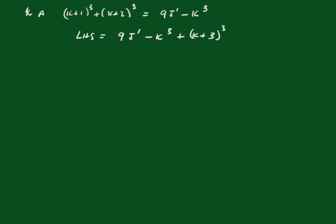Okay, so a couple of ways of doing this. I'm going to use the difference of two cubes — but if you prefer, you can just expand it out and it'll still work out. So we have k plus 3 cubed minus k cubed, which equals 9j, plus the difference of cubes expansion: k plus 3 minus k, times k plus 3 squared, plus k plus 3 times k, plus k squared.